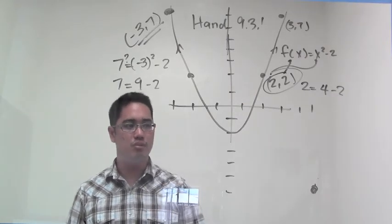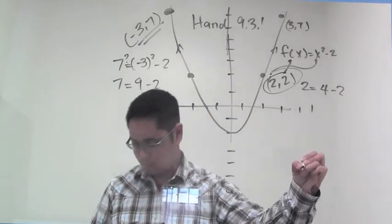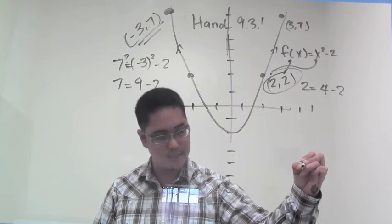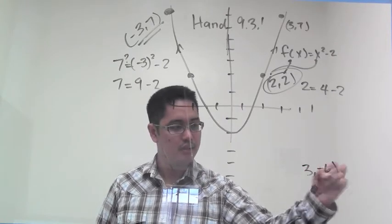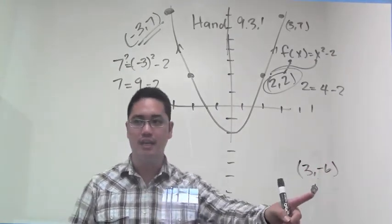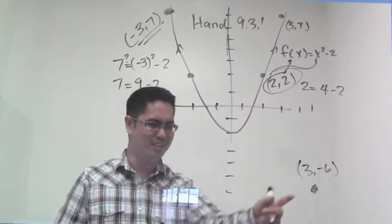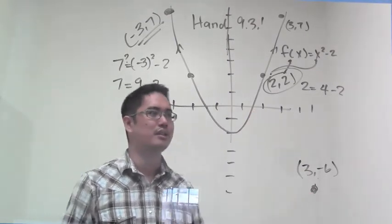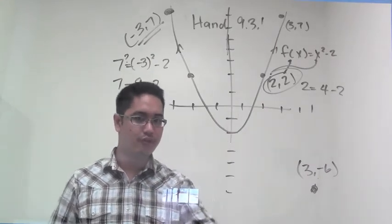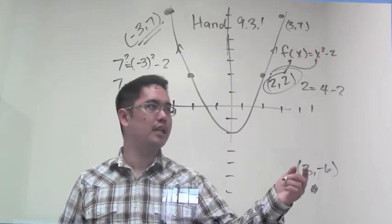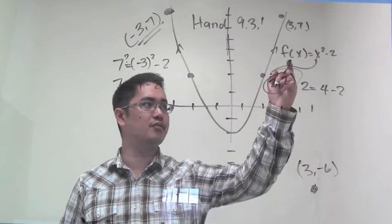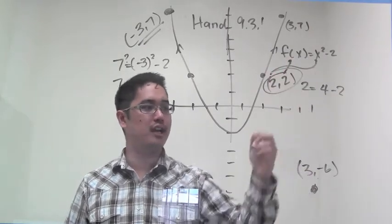Let's plug in something that isn't true. How about this: 3 comma negative 6. Does this point land on that graph? Absolutely not. You can obviously see it's not even close. The math should confirm that. If I plug in negative 6 for the f(x) and I plug in 3 for the x,